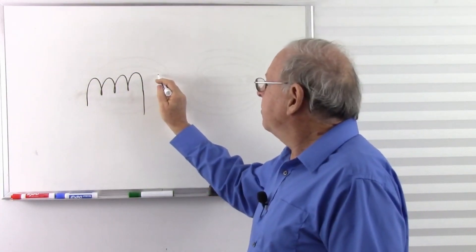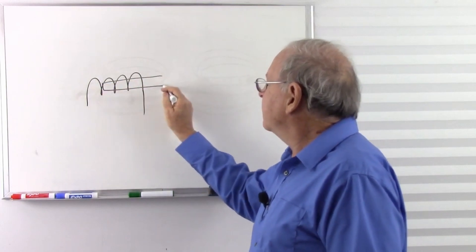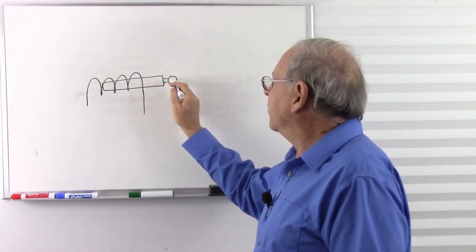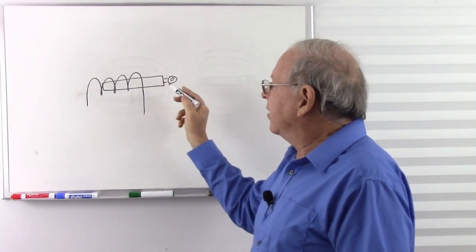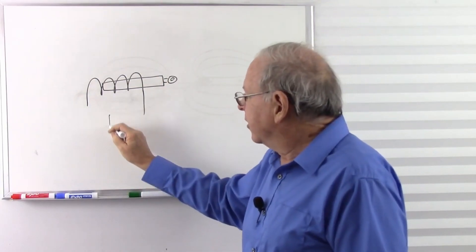And we have a plunger that's made of ferrous metal. Let's put a little ring on here so we can hold on to something. And so what's going to happen when we energize that?